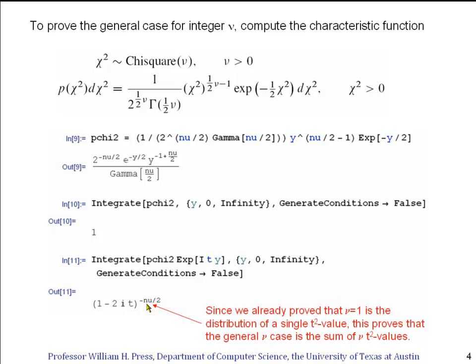The important thing about this is the occurrence of ν in the exponent here. Now we already proved that for ν = 1, this is the sum of a single t-value squared. So if we're going to sum many t-values squared, we're going to multiply their characteristic functions. And so if we sum ν of them, multiplying those characteristic functions gets an exponent ν in the product of those individual characteristic functions. But we already got exactly that as the characteristic function of the general chi-square of ν distribution. And that proves the theorem in the general case.